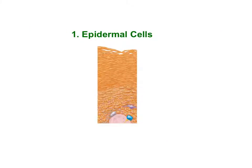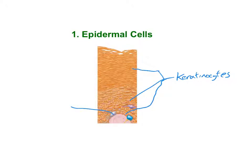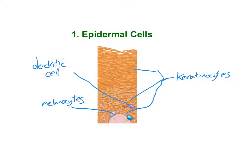The majority of cells in the epidermis are keratinocytes, shown in the orange-tan color. The second most common are melanocytes, found only at the bottom of the epidermis. Third most common are the dendritic cells, which are part of the immune system. And there are occasional tactile cells, also called Merkel cells.